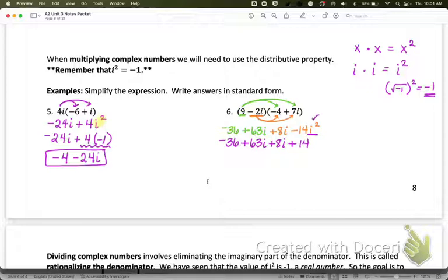And this is going to become positive 14. And that's because i squared is equal to negative 1. So now we can combine our like terms. The constant goes first. So that's negative 22. And then 63i plus 8i gives me plus 71i. And that's our final answer in standard form.